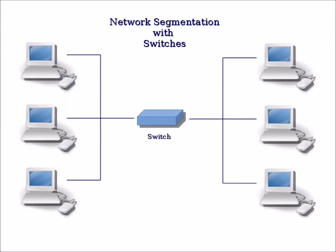Segregation at a network level is normally called segmentation, which could be achieved by physically separating networks, or logically by using virtual local area networks. This could be achieved by using network devices with such capabilities, such as switches, routers, and wireless network controllers.